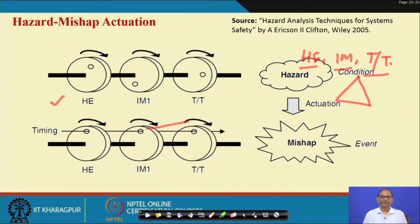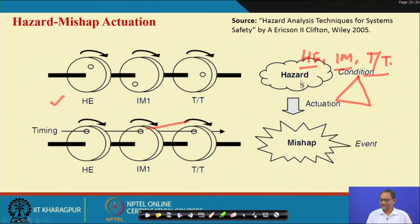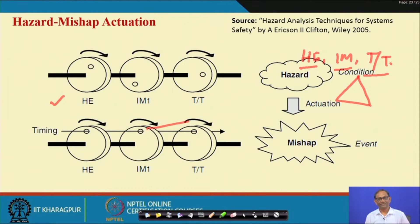The graphical representation shows these three components of hazards. In the top figure, they are not aligned — this represents a hazard state with no accident. When they are aligned, timing is very important; at a particular time when all those things align, it leads to an accident. This is the hazard mishap actuation.